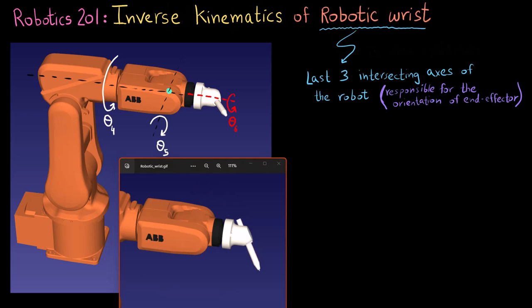So now the question is what is inverse kinematics? But before we answer that we need just a recap of the previous video that the robotic wrist is responsible for just the orientation of the end effector. So the last three intersecting axes do not define where the end effector is going to be as in the position. They only define the orientation of the end effector. So just keep that in mind.